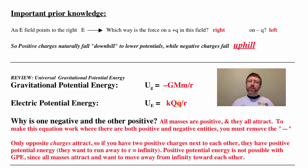Thus, only opposite charges attract. So if you've got two positive charges next to each other, they have positive potential energy. It simply means they want to run away from each other until they're infinitely far away. Now you would not be able to have positive potential energy with gravitational potential energy because all masses attract and want to move away from infinity towards each other. So you can't actually have positive potential energy with masses. In other words, gravitational potential energy can never be positive if you set infinitely far away as zero potential energy, whereas electric potential energy can be positive or negative depending on the signs of these charges.